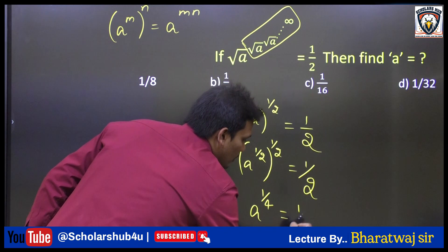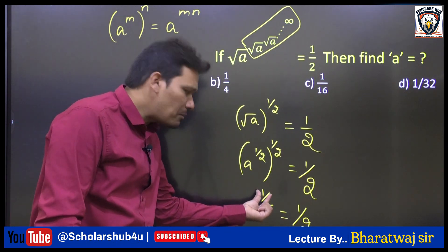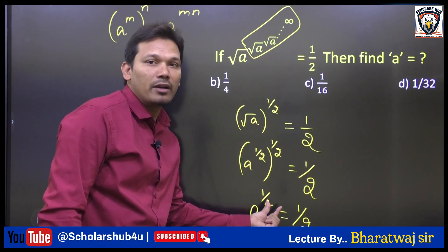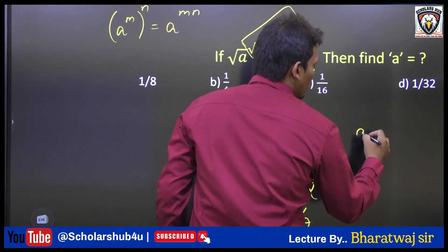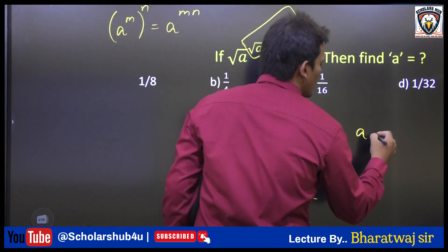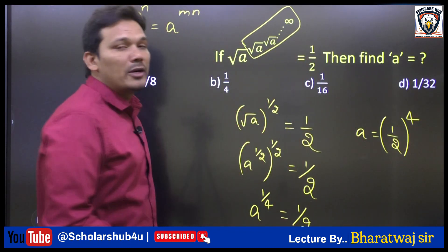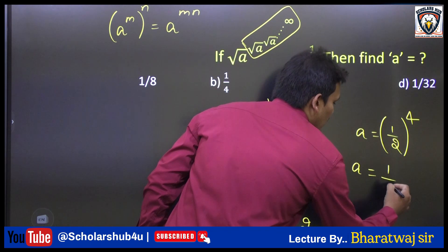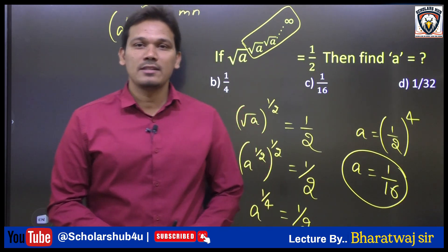Applying the identity, a power 1 by 2 into 1 by 2 gives a power 1 by 4, which equals 1 by 2. Now shifting the exponent to the right side, it acts as a power: a equals 1 by 2 to the power 4. So 1 by 2 whole power 4 equals 1 by 16. Therefore, the answer is a equal to 1 by 16.